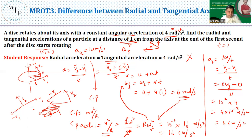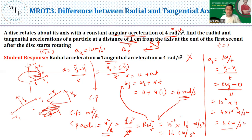Do not think that 16 + 4 should equal 4. The given alpha is the net angular acceleration, whereas 16 cm/s² is the radial (centripetal) linear acceleration and 4 cm/s² is the tangential linear acceleration — these are different quantities and cannot be summed to equal alpha.